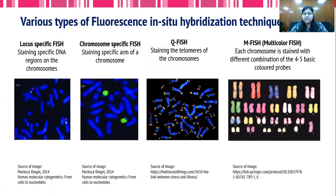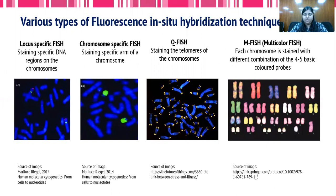The latest one is multicolored FISH, in which each chromosome of the individual is stained with a different color. This is made possible by using different combinations of four to five basic colored probes, which helps to distinguish each and every chromosome of the individual.